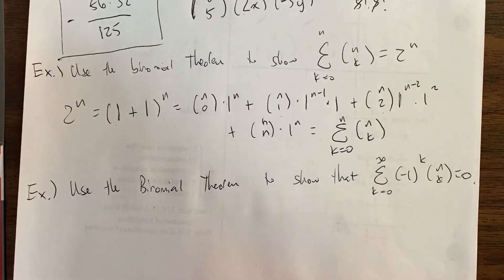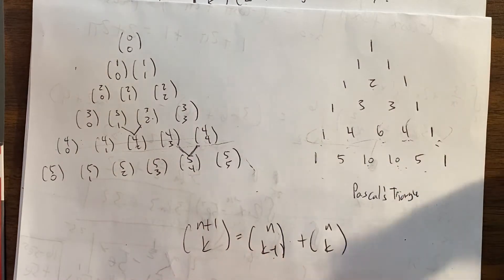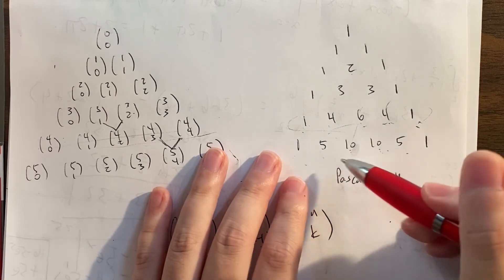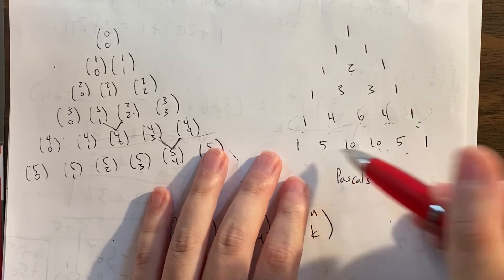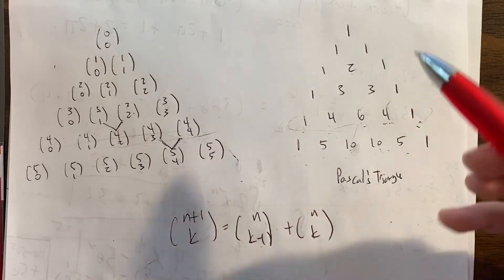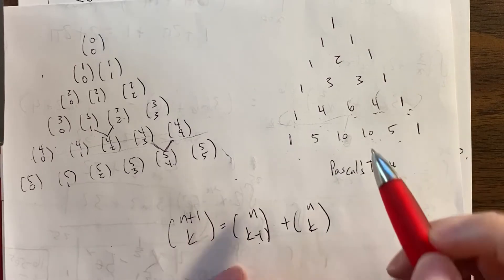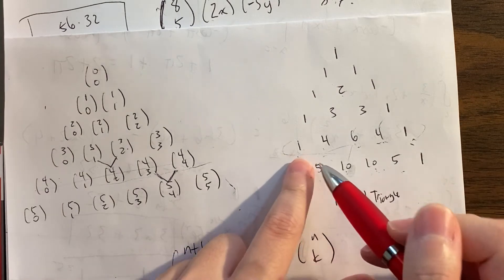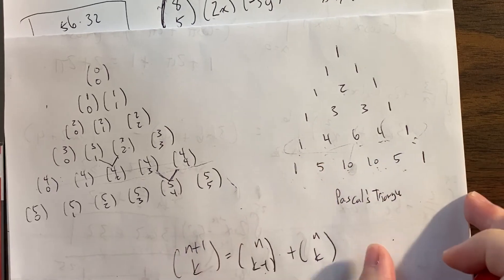Now we're going to do a very similar thing: use the binomial theorem to show that if you alternate the terms — like 1 minus the next one, plus the next one, minus the next one — you get 0. For example in the 5th row: 1 minus 5 plus 10 minus 10 plus 5 minus 1 equals 0. And it also works in the 4th row: 1 minus 4 plus 6 minus 4 plus 1 equals 0.